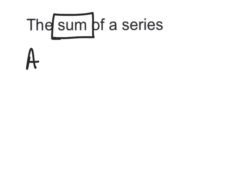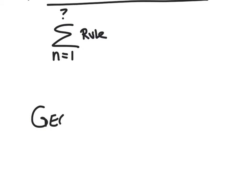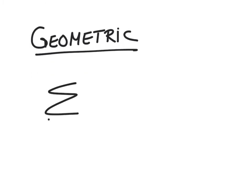Before I dive into my first example, I want to talk about the word sum. We've talked about arithmetic sum — that's the sum of our series. There is a formula, but we can always find the sum using sigma notation: from n equals whatever the first term may be to whatever term you want, then you put your rule. We talked about the calculator method — hit alpha window — to find the summation button. Geometric also has a sum, so anytime I see sum, I can use sigma notation from n equals 1 to whatever number, and put my rule: a sub 1 times the ratio to the n minus 1.